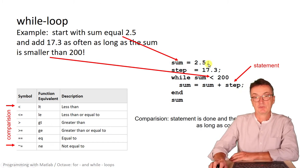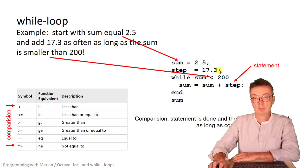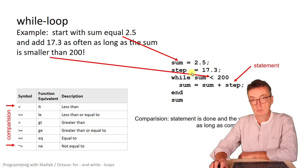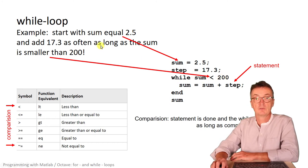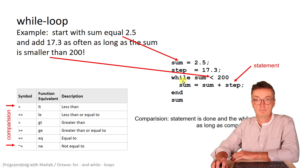As long as you could translate to until. So we don't know how often the loop needs to run. And that is not practical in for loops. And therefore we try it out with a while loop. And the structure is here. Sum equals 2.5. That's the starting value. The step size is 17.3. And now the while loop has its structure again, starting with a while. You do the comparison as long or until the sum is larger than 200 or as long as the sum is smaller than 200. You are asked to do the summation. Again, the while loop ends with an end.